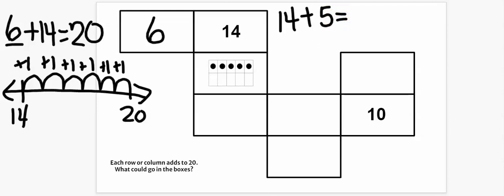Well, I know that 14 and 6 more were 20. So 14 and 5 more is one less. So that would be 19. So what number would go in this box? Well, this whole column here has to add up to 20. So I know I already have 19. So I just need one more. Very good.